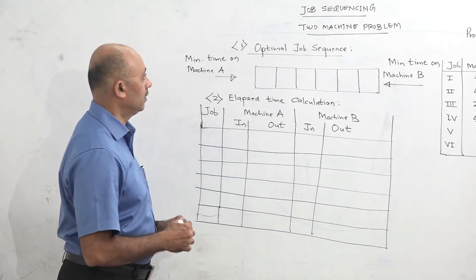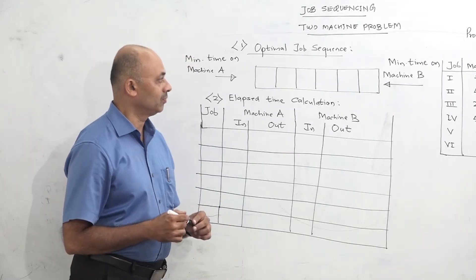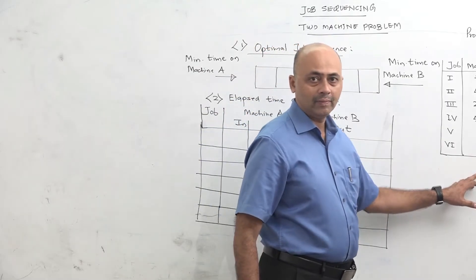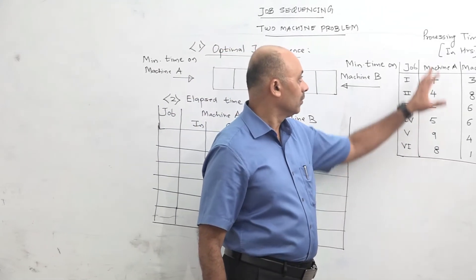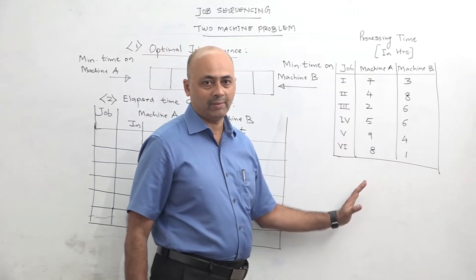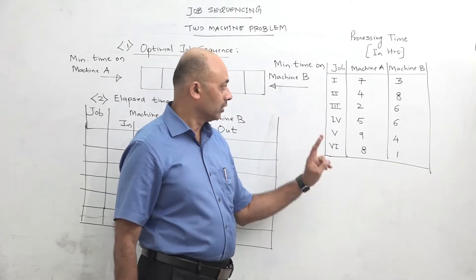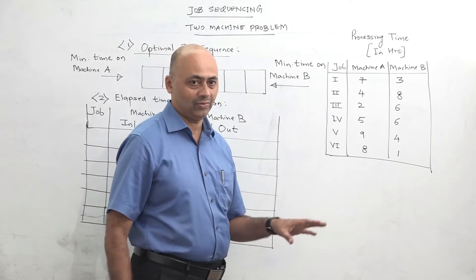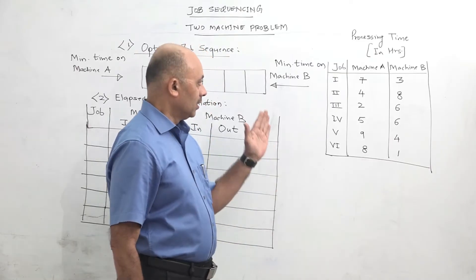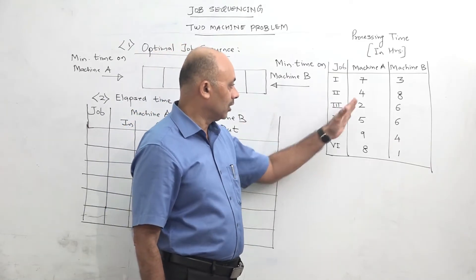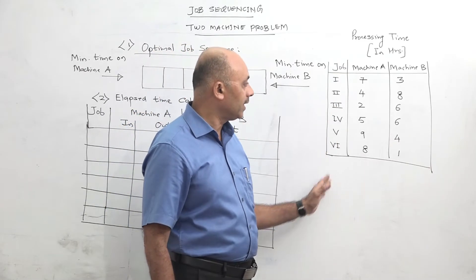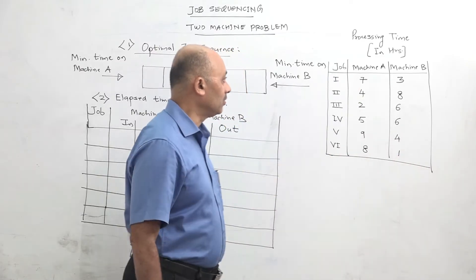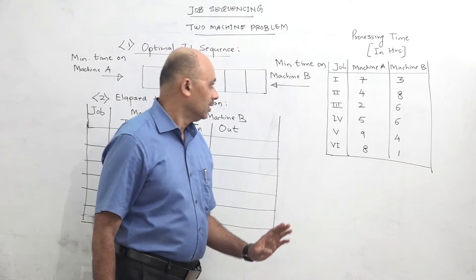Now we will see how to solve the two machine problem. The data given is processing time on each machine, machine A and machine B. There are two machines and six jobs: 1, 2, 3, 4, 5, 6. The sequence is that a job will first be processed on machine A and then it will go on machine B. The processing time is given in hours.